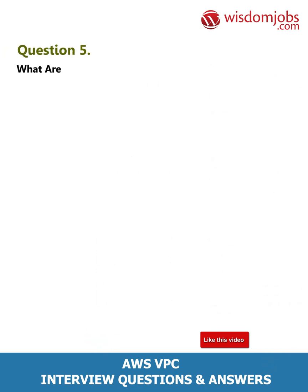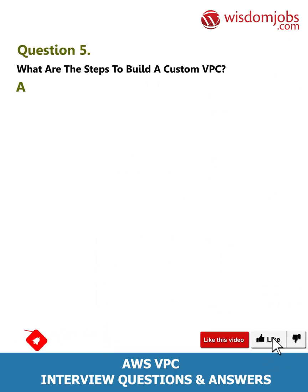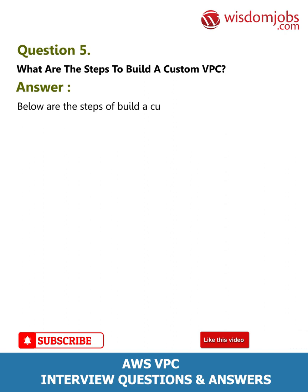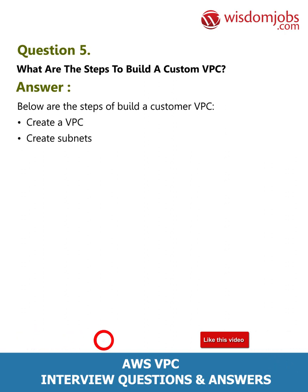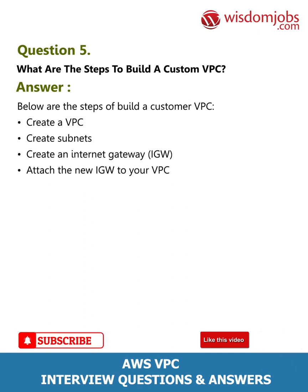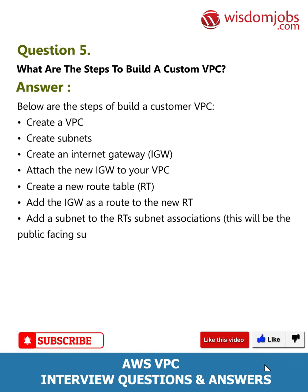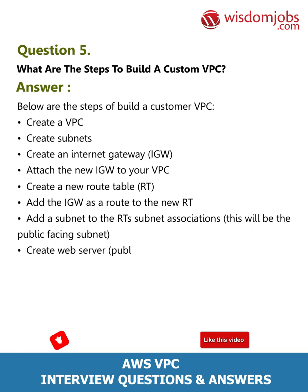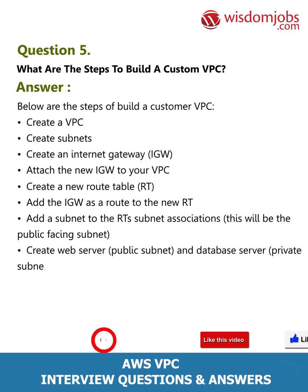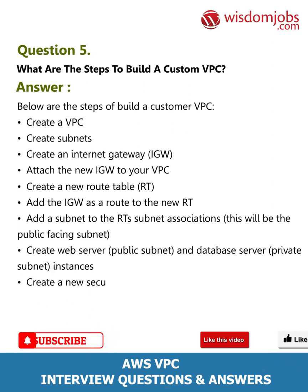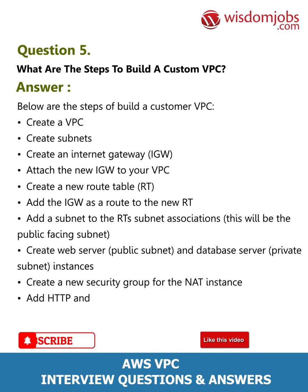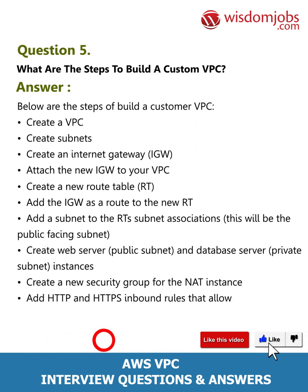Question 5: What are the steps to build a custom VPC? Answer: Below are the steps to build a custom VPC. Create a VPC. Create subnets. Create an internet gateway (IGW) and attach the new IGW to your VPC. Create a new route table (RT) and add the IGW as a route to the new RT. Add a subnet to the RT's subnet associations — this will be the public-facing subnet. Create web server (public subnet) and database server (private subnet) instances.